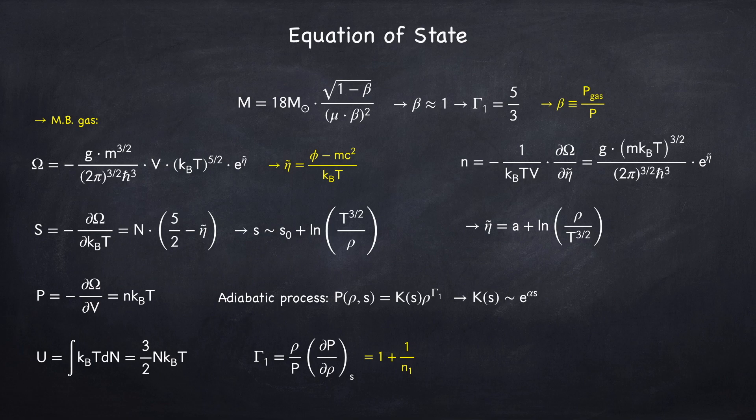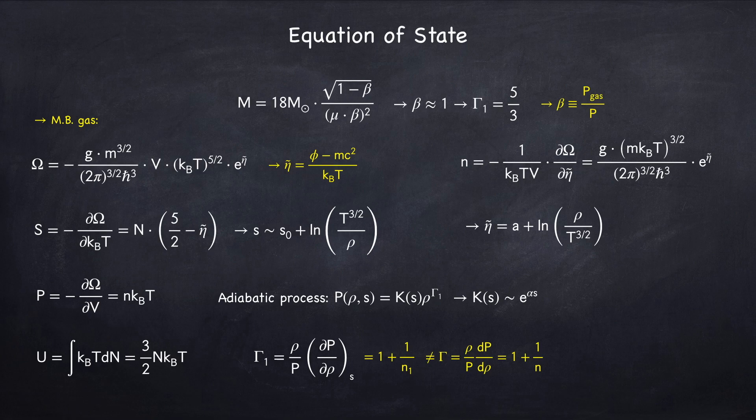Now, p equals k times rho raised to some exponent is a polytrope relation. So we can write gamma 1 as being 1 plus 1 over some number, which I'm calling n1, which is the polytrope index. Now, don't confuse this with what I called the polytrope index in Stellar Physics 3b, which I said was related to gamma, which is not gamma 1.